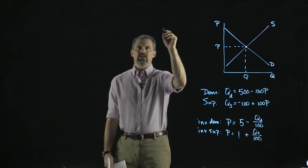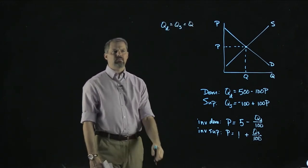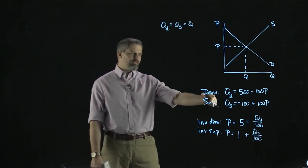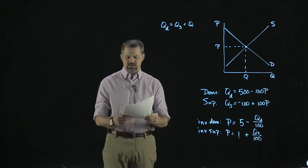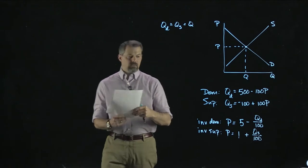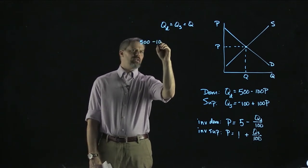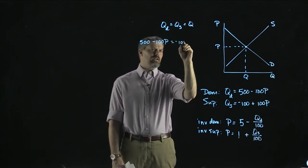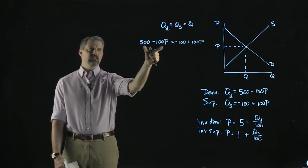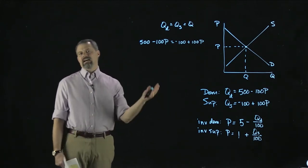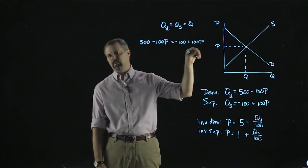The definition of equilibrium price is the price at which quantity demanded equals quantity supplied — so we drop the subscript and call it Q. We have Q equals the demand expression and Q equals the supply expression, so we can set those two things equal to each other. Let's set demand and supply equal to each other.